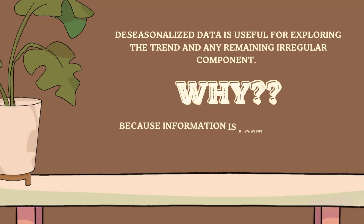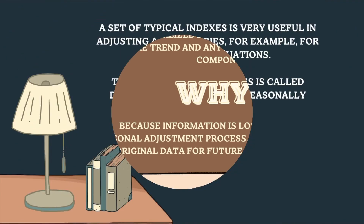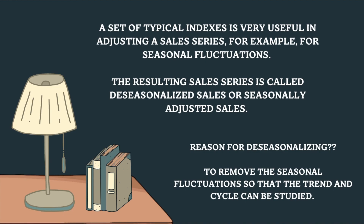Information is lost during the seasonal adjustment process, so you should retain the original seasonal data for future modeling purposes. A set of typical indexes is very useful in adjusting a sales series for seasonal fluctuations. The resulting sales series is called de-seasonalized sales or seasonally adjusted sales. The reason for de-seasonalizing the sales series is to remove the seasonal fluctuations so that the trend and cycle can be studied.